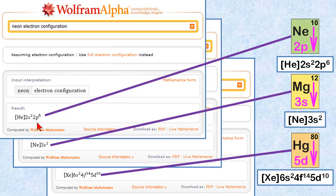Here's how we can check our work. We can go over to Wolfram. We can type in neon electron configuration, and we'll get the results for helium plus the electron configuration, exactly as we just got. We can do the same for magnesium and the same for mercury.